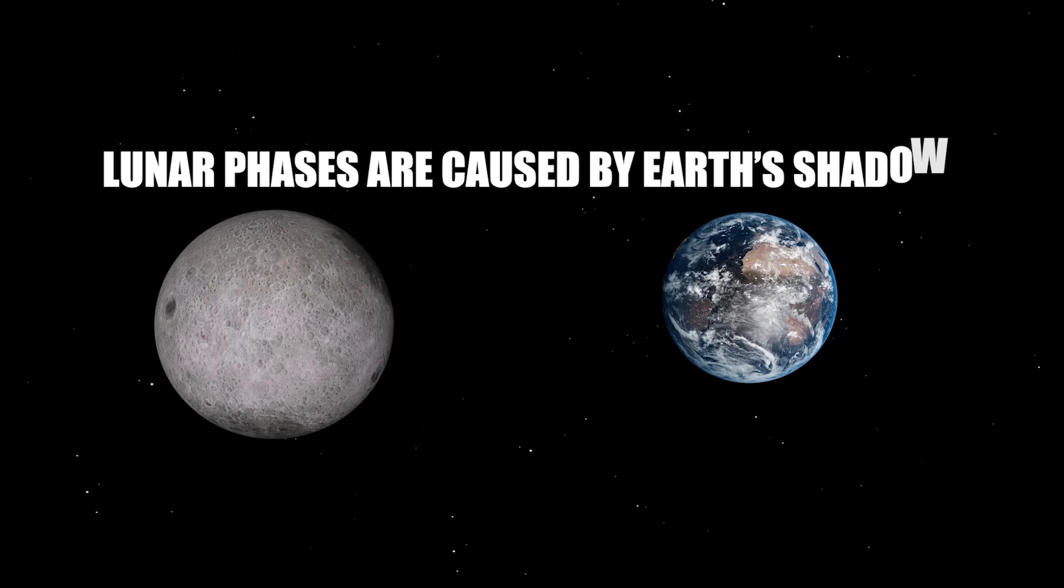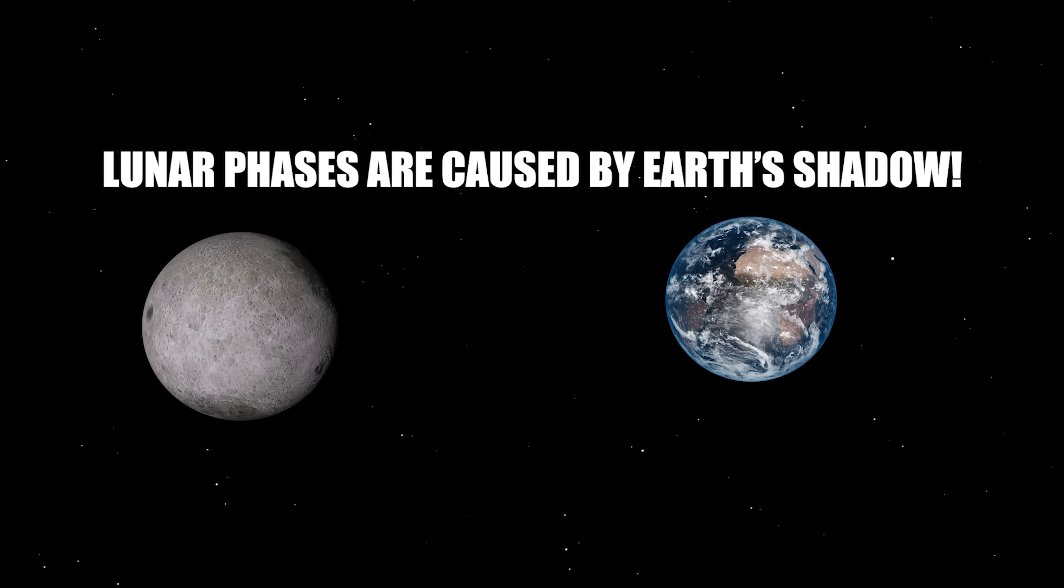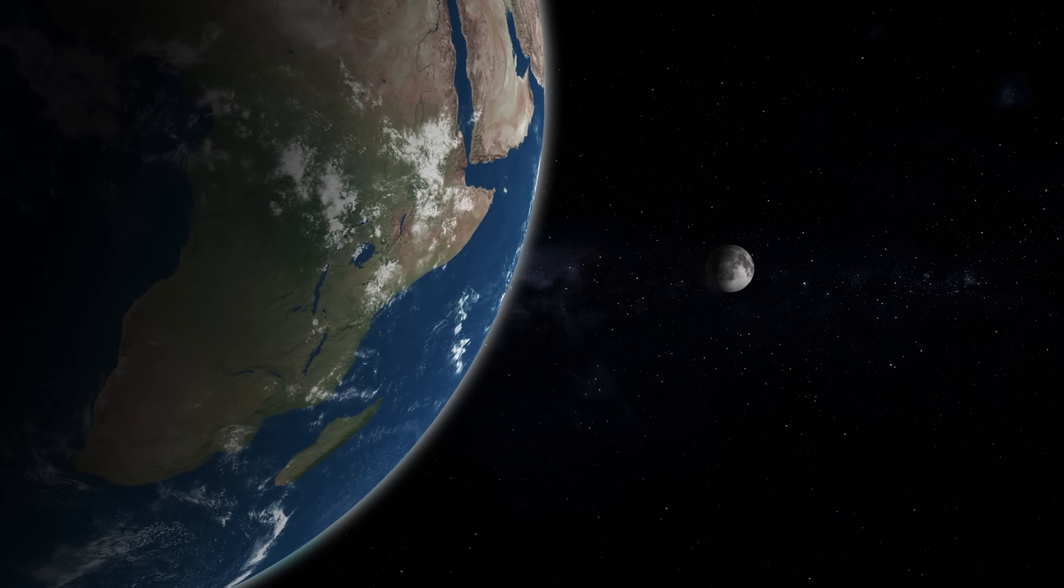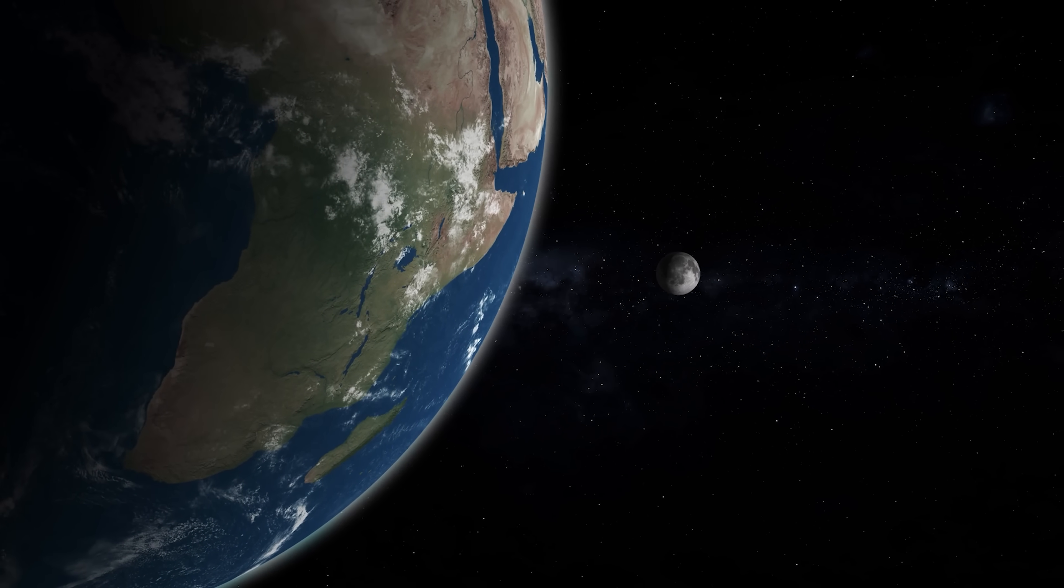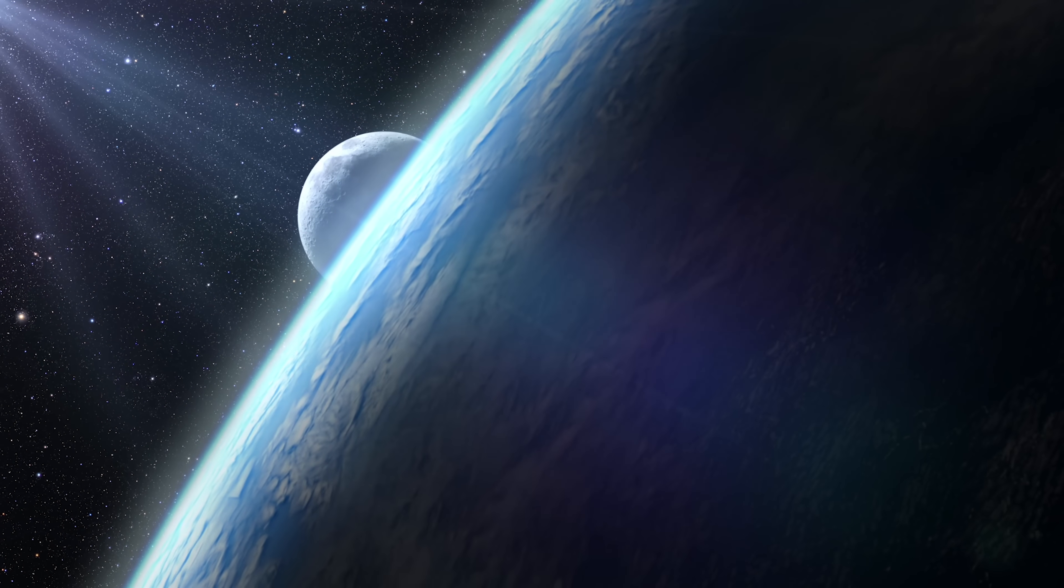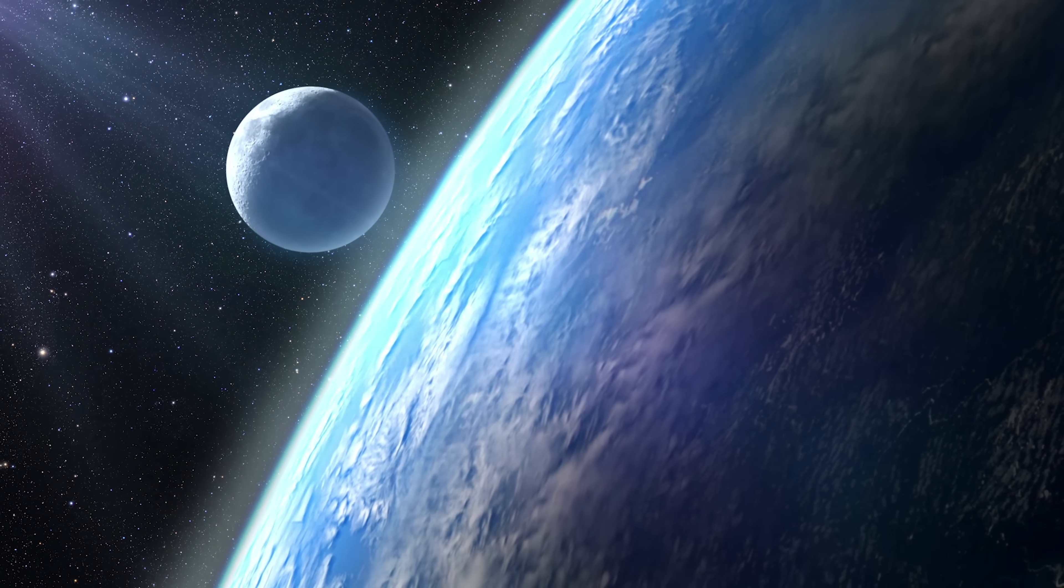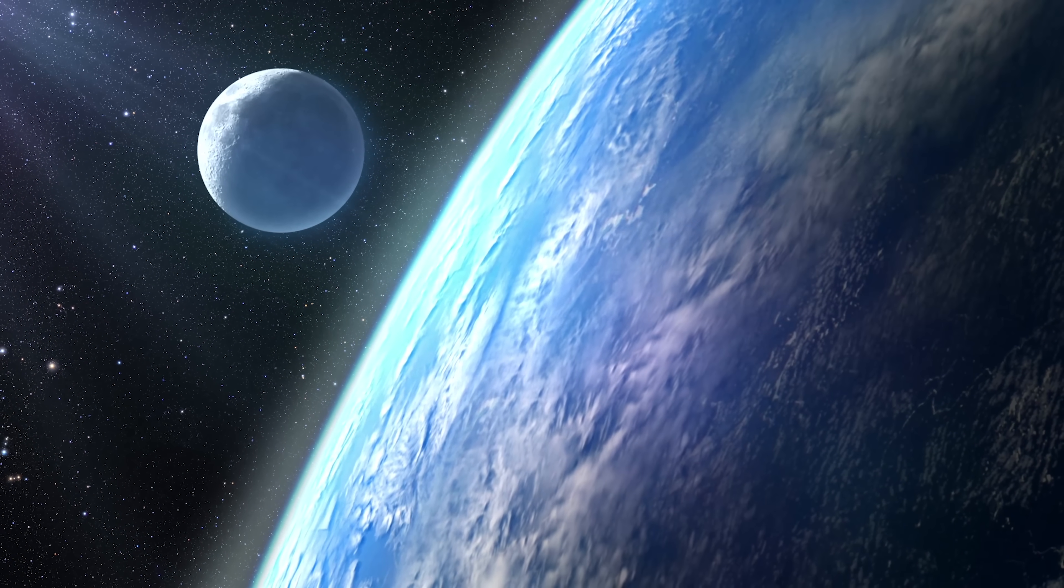Lunar phases are caused by Earth's shadow. There are quite a few people who believe that lunar phases are created by Earth's shadow projected onto the Moon. Others even think, can you believe it, that the Moon changes shape because of clouds. The reality is much simpler and more fascinating.